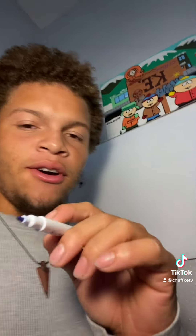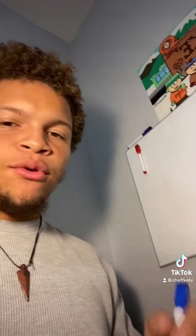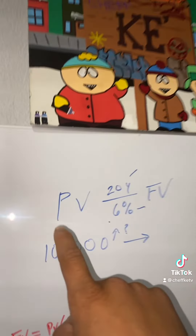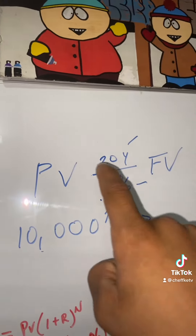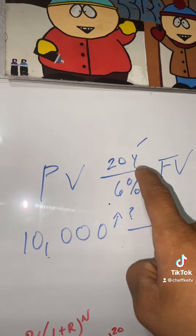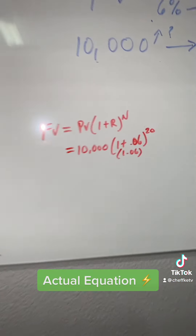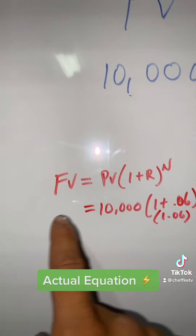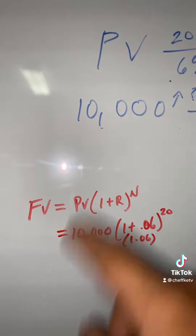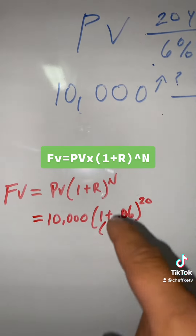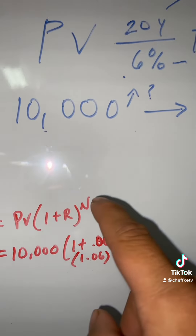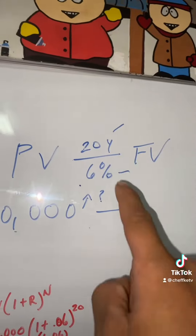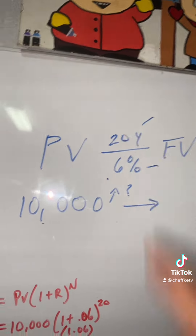I do have it written down, but I want to break it down on an old school whiteboard. So you got the present value of $10,000, at 20 years, at 6%. The future value equals the present value times one plus the rate, times the number of years.